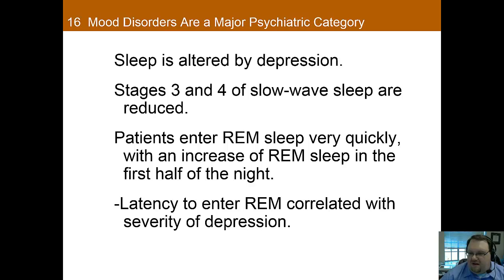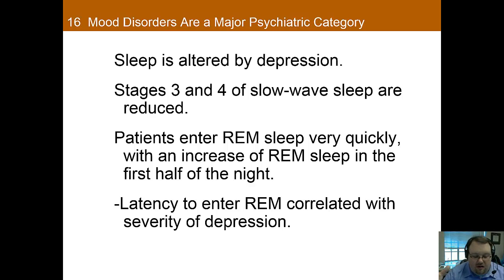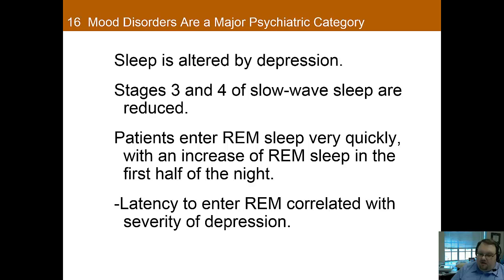Sleep and depression are quite strongly related, and insomnia precedes depression more often than depression precedes insomnia. There are actual sleep changes seen in depression: first, slow-wave sleep — stages 3 and 4, now all classified as stage 3 — is reduced in people with depression. Additionally, people with depression seem to enter REM sleep very quickly, with increased REM during the first half of the night, and the latency to enter REM is correlated with the severity of depression.